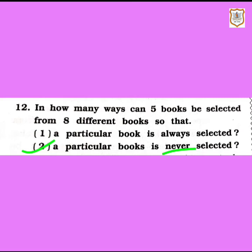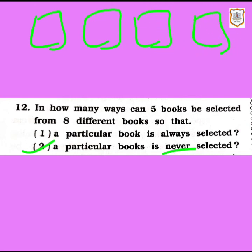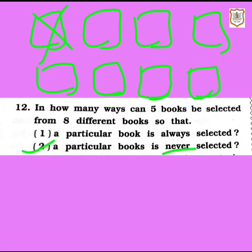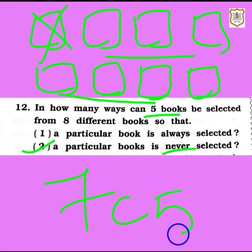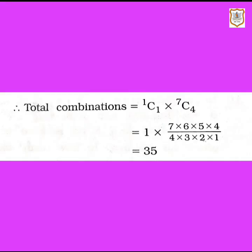Now let's read the second condition: a particular book is never selected. That means suppose there are eight books and this particular book is never selected. So remaining there are seven books, and we have to select five books. Out of seven we have to select five, which gives 7C5. So this is the combination for the second condition — a particular book is never selected.